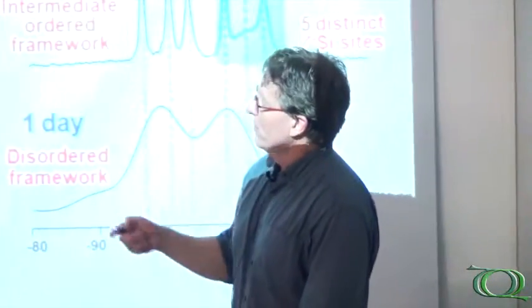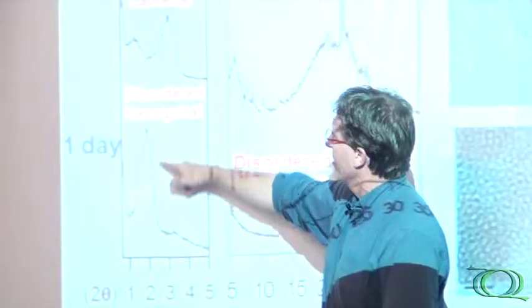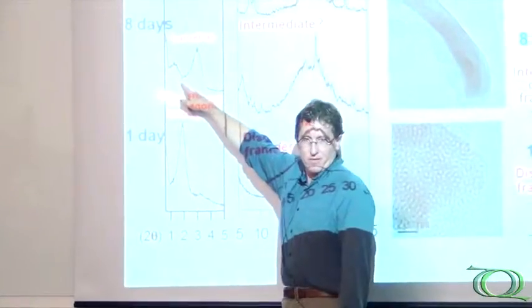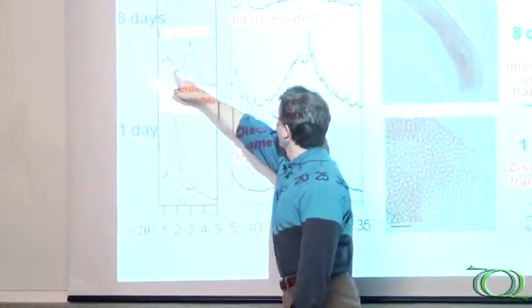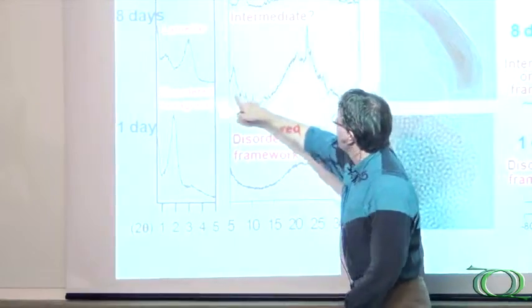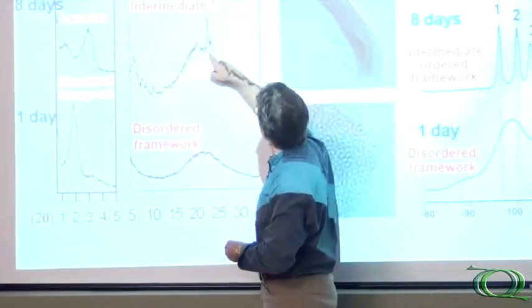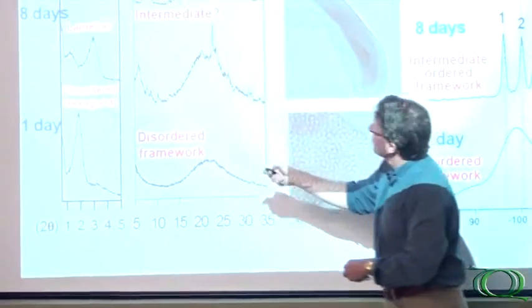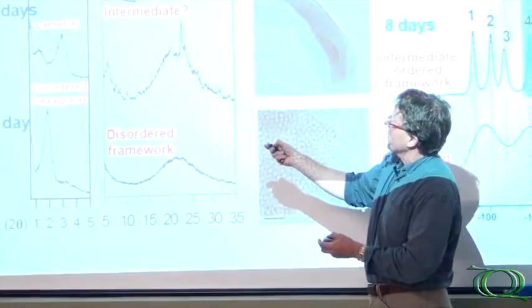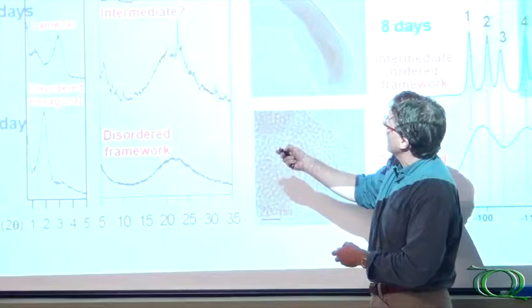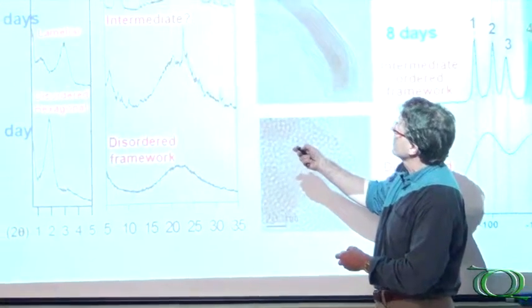After eight days though things are starting to happen and it's transforming to a lamellar phase. You can see the small angle, you also see the appearance of high angle scattering which basically continues as you go to 12 days. Lamellar phase and now you see evidence of crystalline ZSM5.